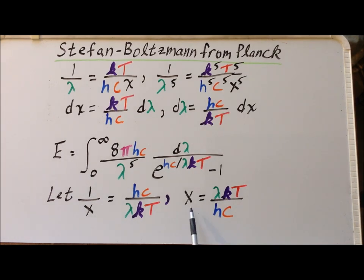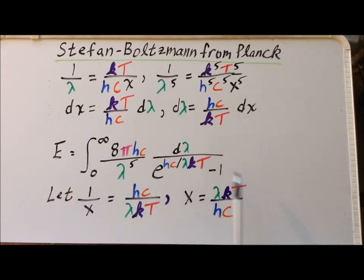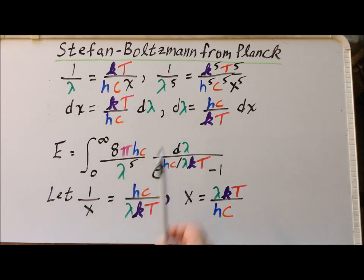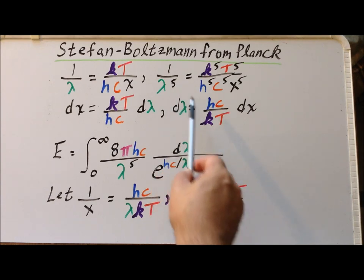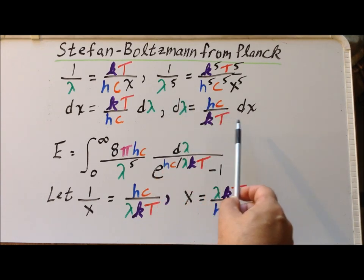From our expression for x, we can find the differential of x. Simply take the differential of this with respect to λ. So we get kT over hc times dλ. Then we can rearrange to solve for the differential of λ, which is going to be equal to hc over kT dx.